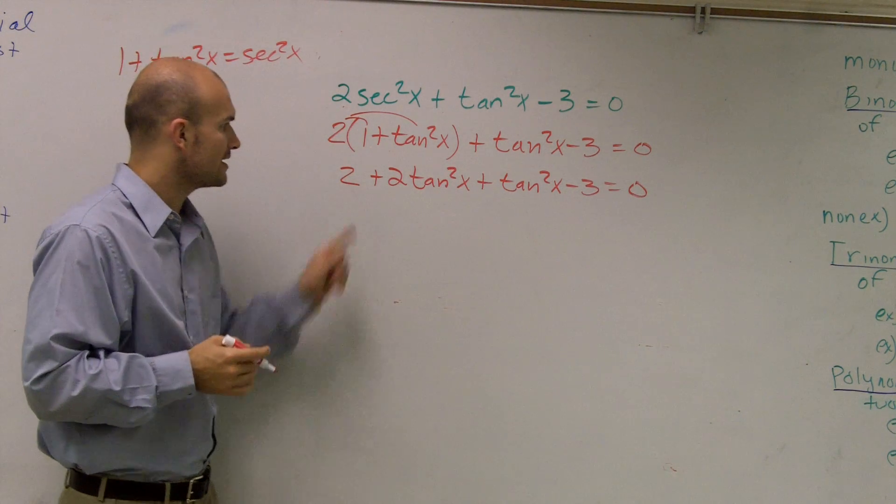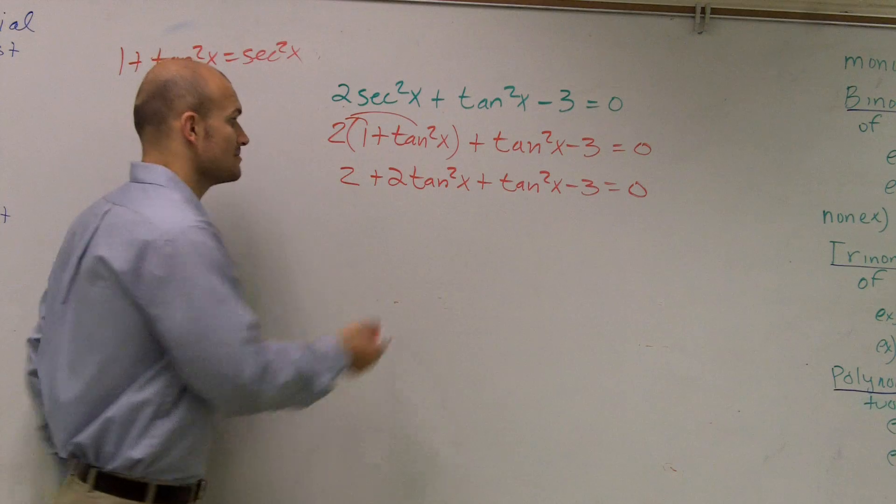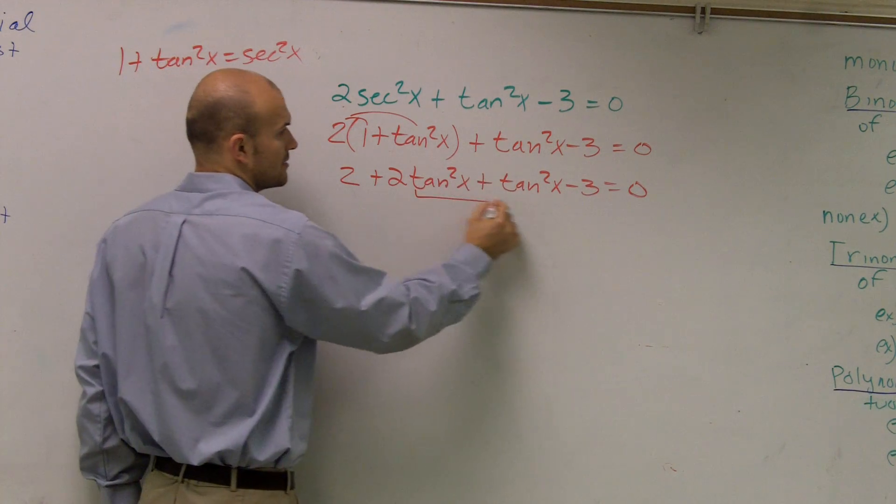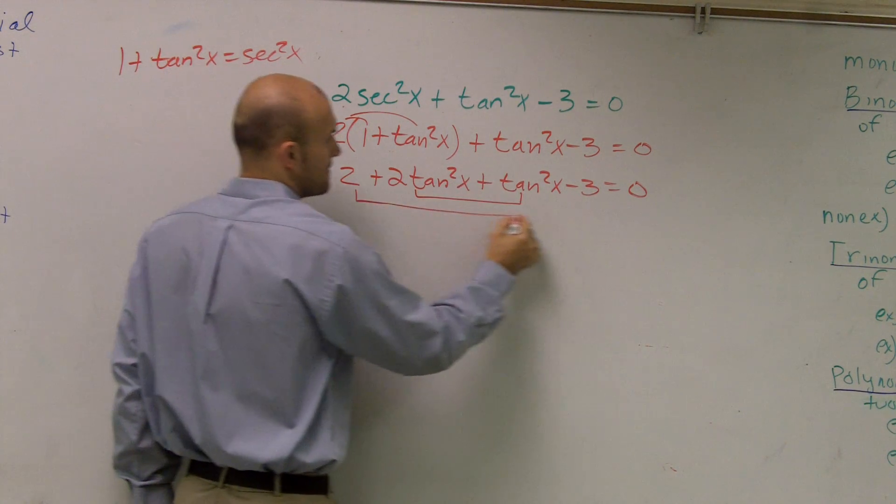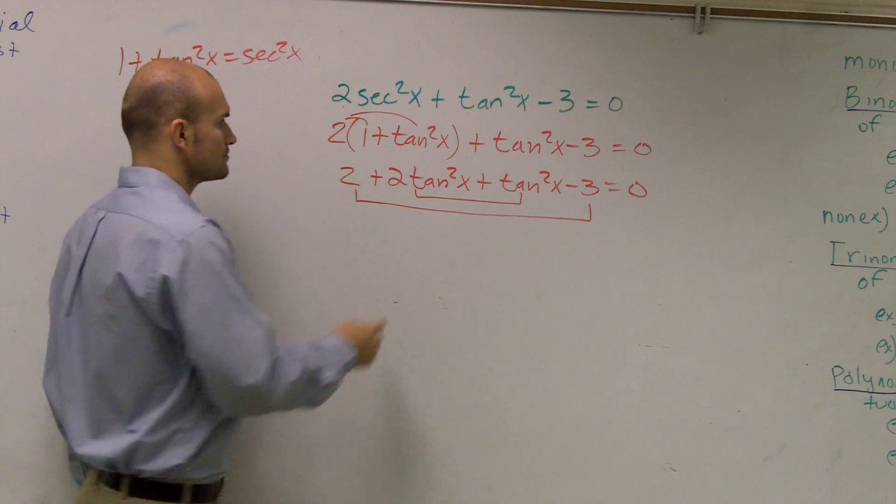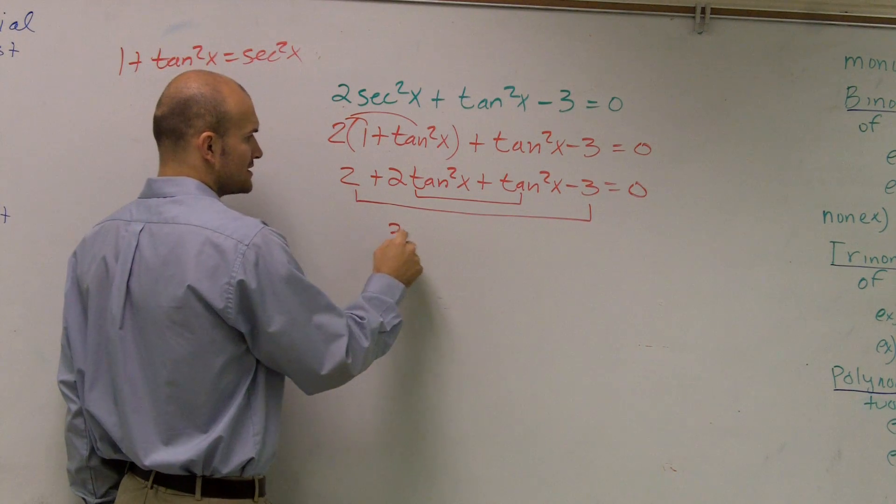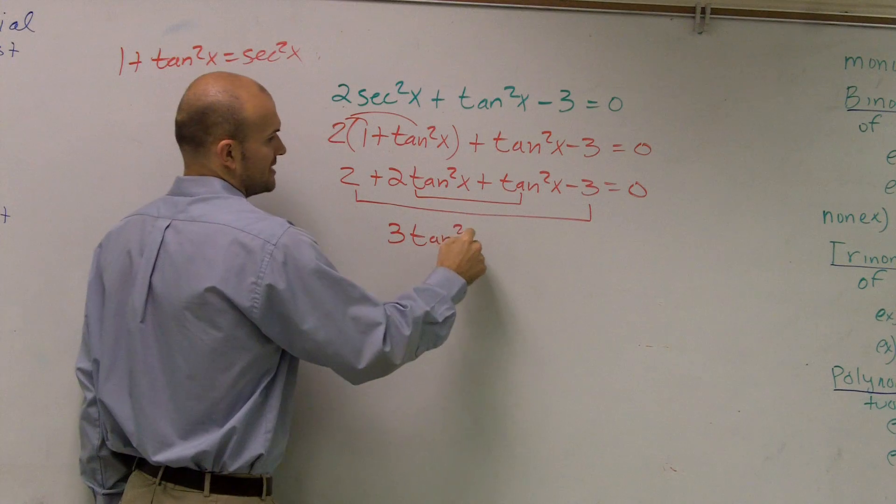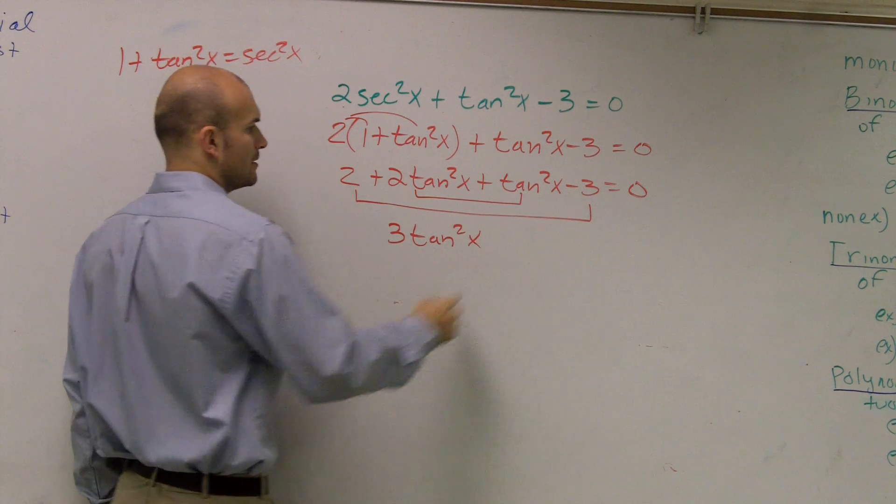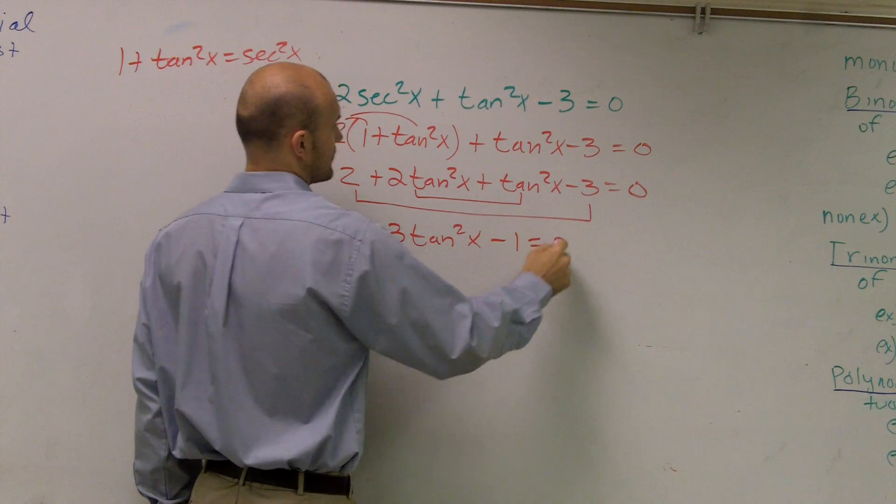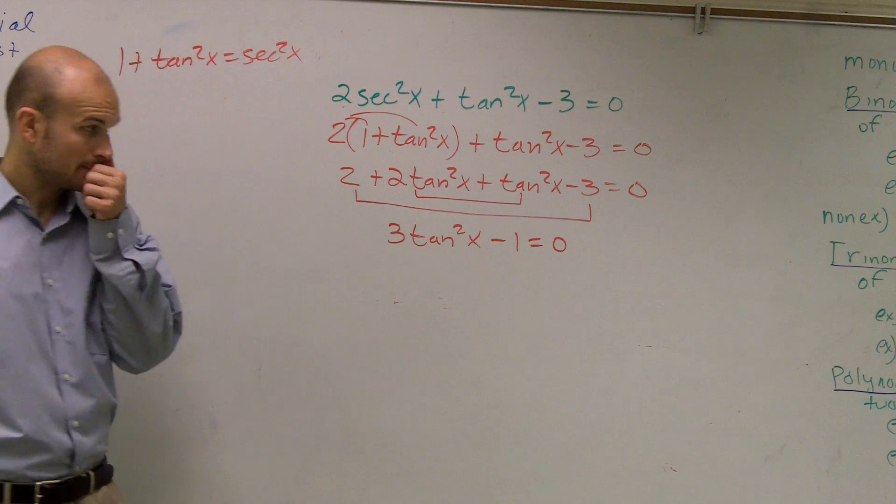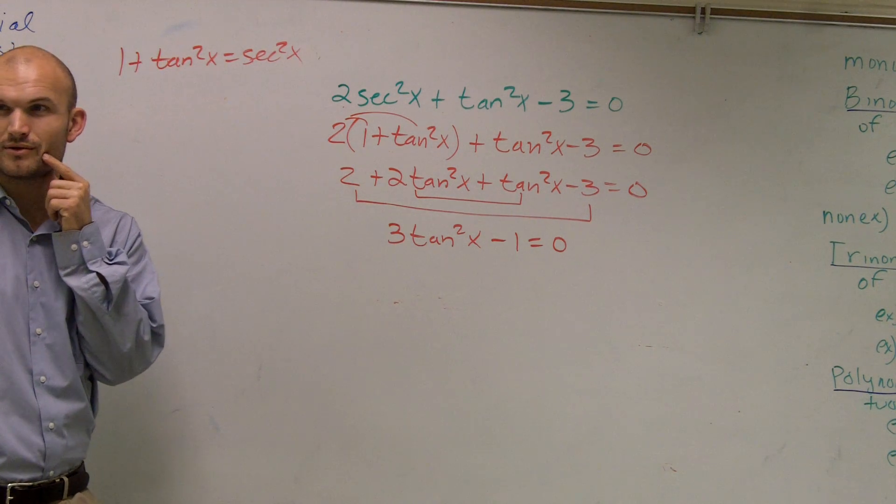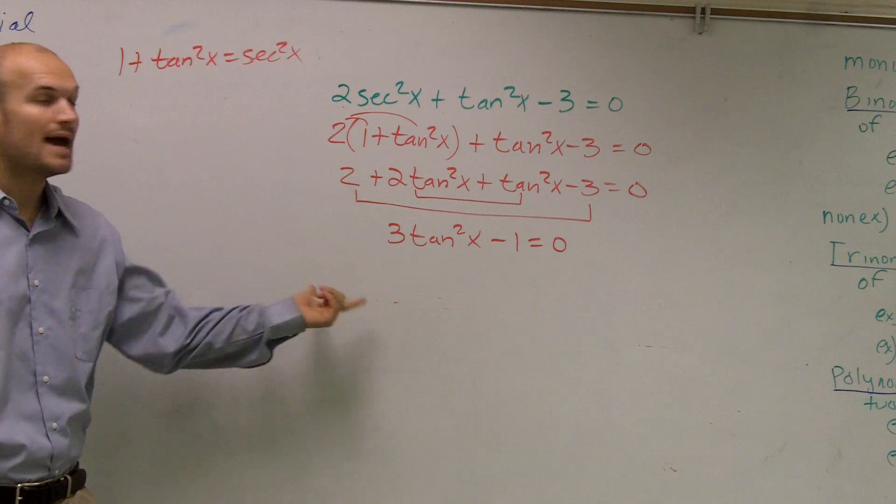Well, here what I can do is now I can combine my terms. These are both tan squareds, so I can combine them and I can combine these. So what I obtain is 3 tan squared of x minus 1 equals 0. Does everybody follow me? Any questions?